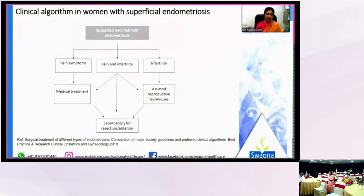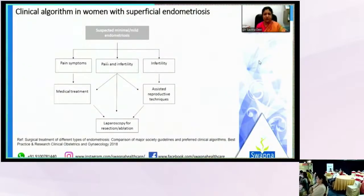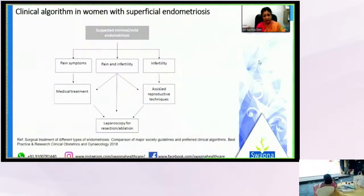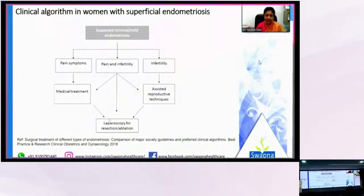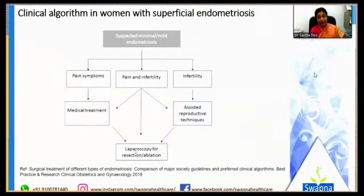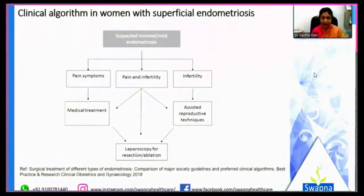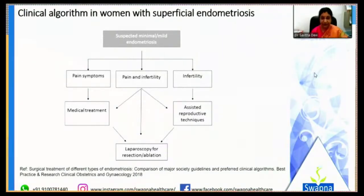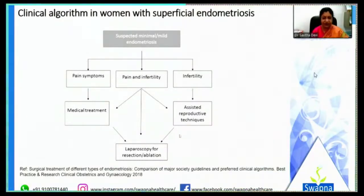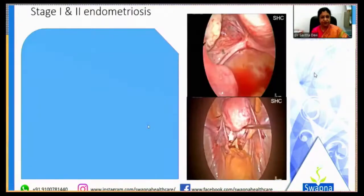For superficial endometriosis in infertility, you can either treat infertility first with ovulation induction or ART and resort to laparoscopy if they fail, or go directly to laparoscopy to clear everything first. Which comes first depends on which center the patient visits — an endoscopy center may clear endometriosis before referring for ART, while an ART center may try stage 1 and 2 medically first. Either approach is valid depending on experience.